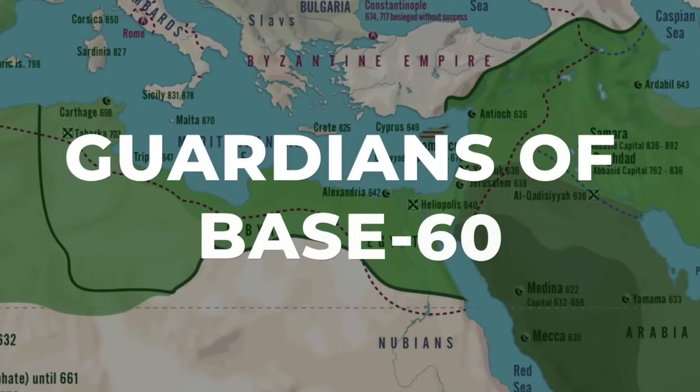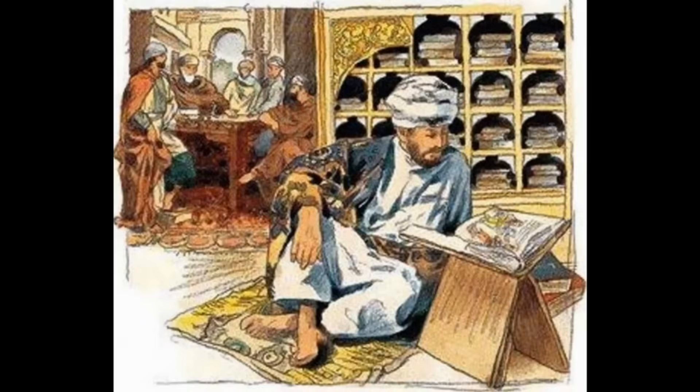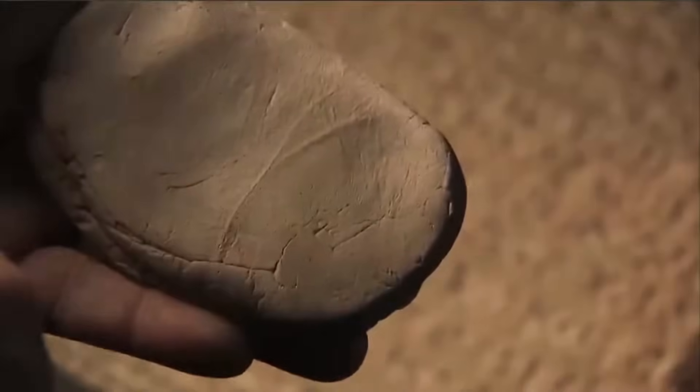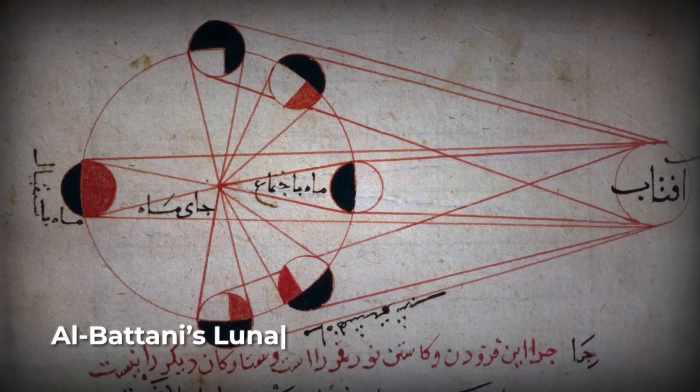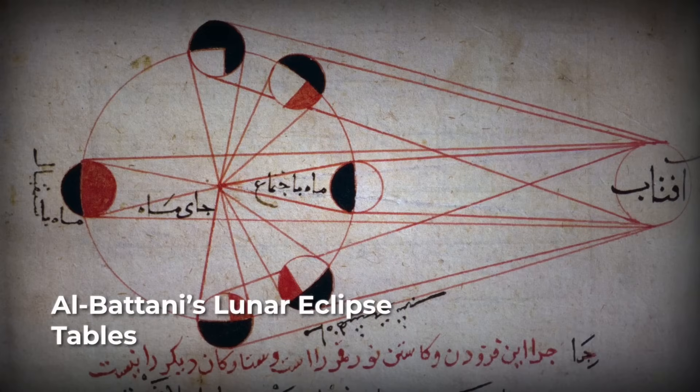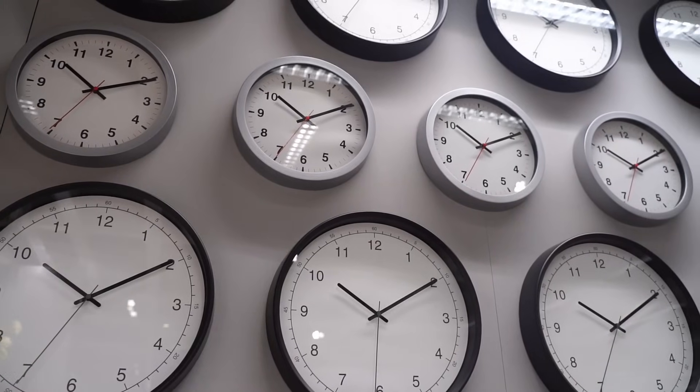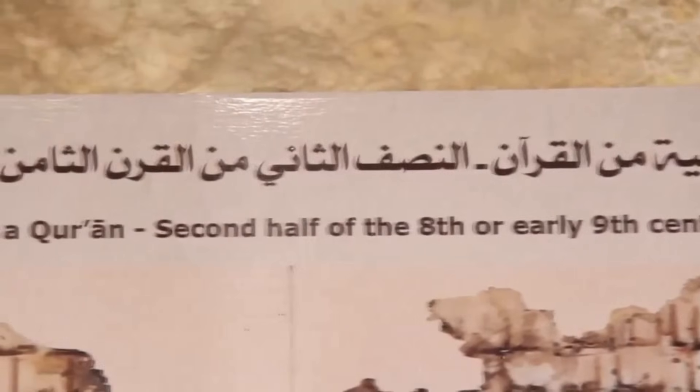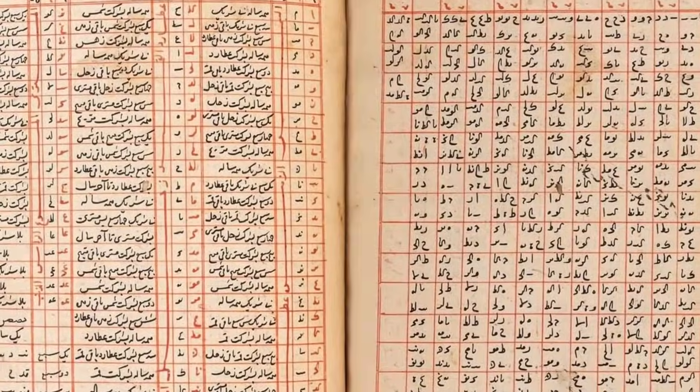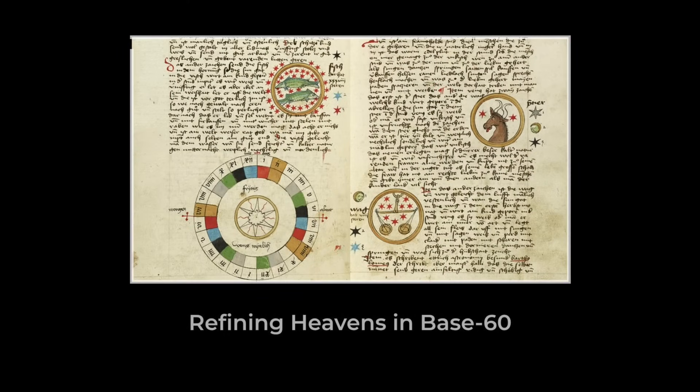In the centuries after Ptolemy, the torch of astronomical calculation passed eastward. Arabic-speaking scholars, working from Baghdad to Cordoba, became the new stewards of sexagesimal math. Al-Battani, writing in the 9th century, compiled tables that let you predict lunar eclipses or the position of the sun, all using base 60 divisions. His Zij al-Sabi, a handbook of the sky, lists planetary positions and prayer times, each calculation broken cleanly into degrees, minutes, and seconds.